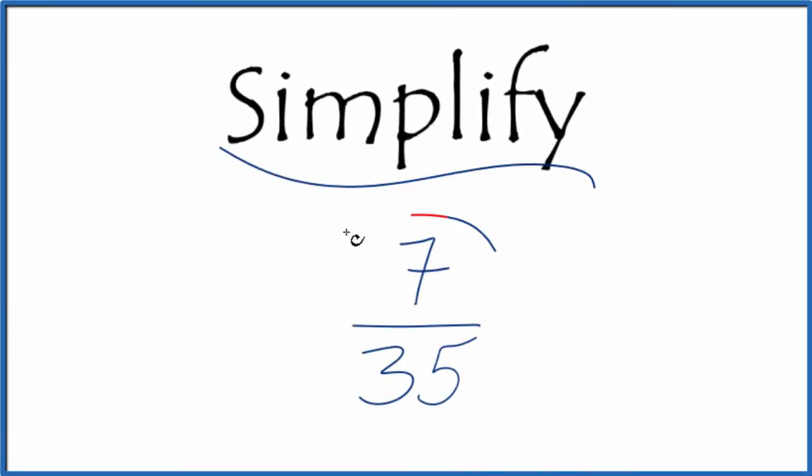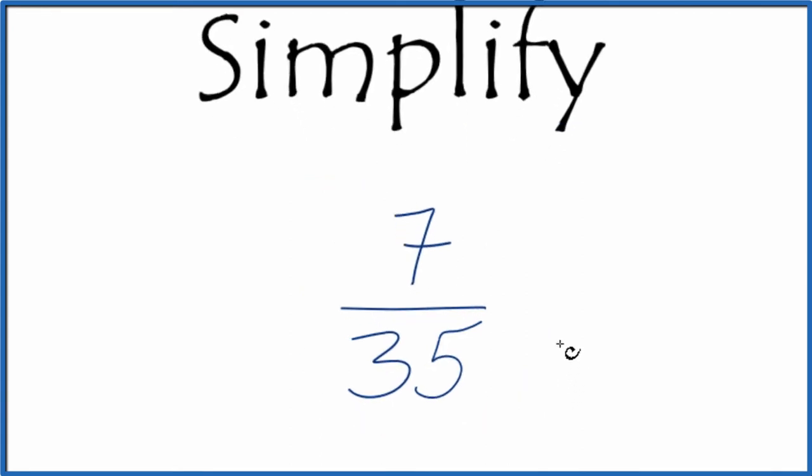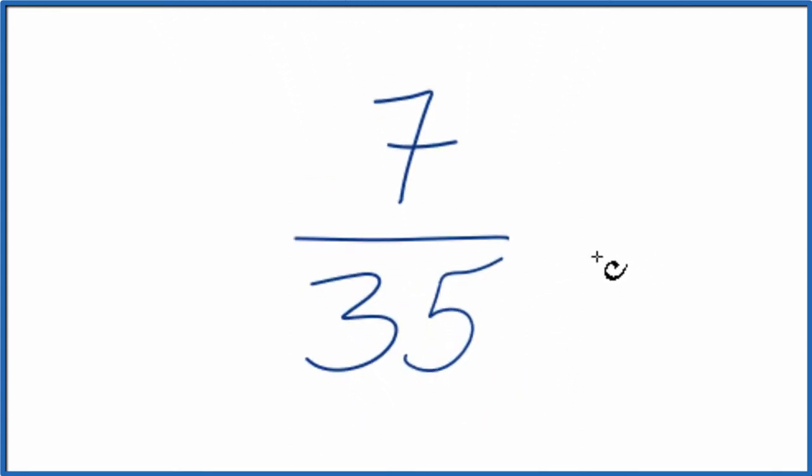Let's simplify the fraction 7/35, and here's how we do it. We want to find another fraction that has the same value - an equivalent fraction to 7 over 35, just reduced to lowest terms.